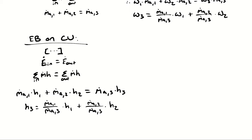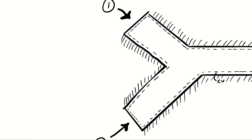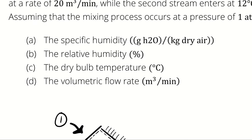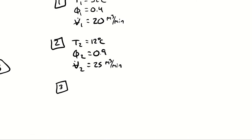So h3 equals m-dot-a1 over m-dot-a3 times h1 plus m-dot-a2 divided by m-dot-a3 times h2. The enthalpy and humidity ratio are mass weighted averages of states 1 and 2. Once I have h3 and omega3, I can use those two independent intensive properties to fully define state 3, from which I can determine any other psychrometric properties including humidity ratio, relative humidity, specific volume, volumetric flow rate, and dry bulb temperature.